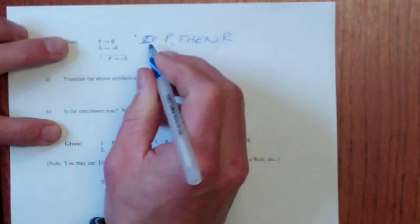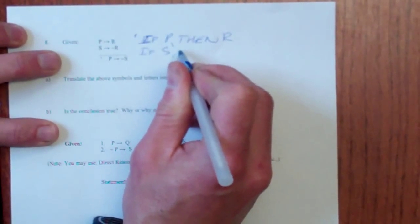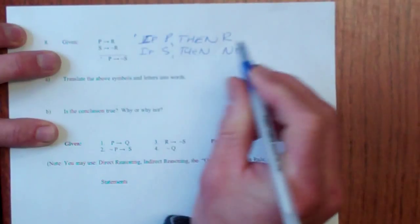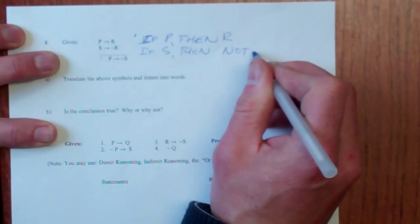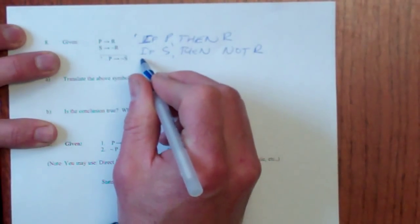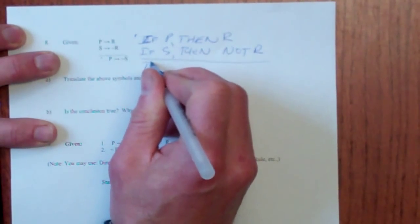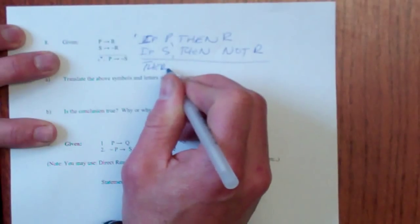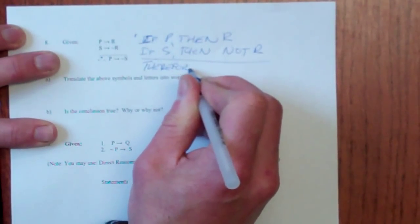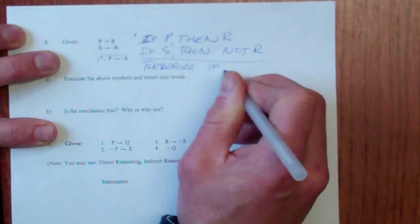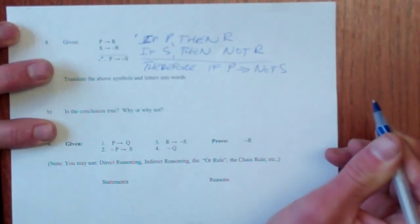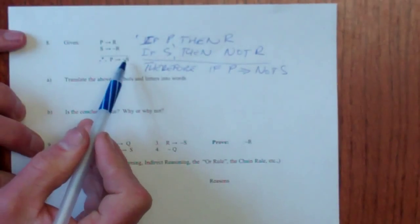This one means just if S then not R. Just checking to see if you know what that tilde means of not R. Then we've got, therefore, that's the three dots there. Therefore, if P then not S. And if you work it out, that is actually true.